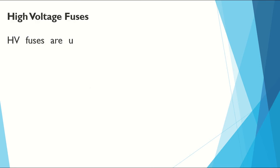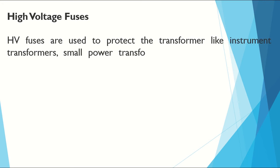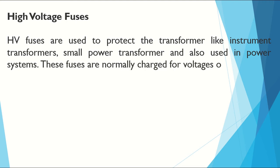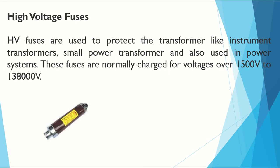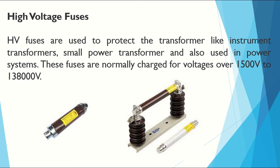High voltage fuses are used to protect transformers such as instrument transformers and small power transformers, and also used in power systems. These fuses are normally rated for voltages over 1500 volts up to 138,000 volts. They can be found in poles, transformer structures, and substations, and come in sand color and white color.